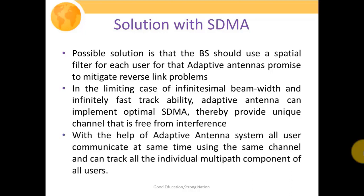With an adaptive antenna system, all users can communicate at the same time using the same channel, and the system can track all individual multipath components of all users. This is the ideal case for adaptive antenna systems.